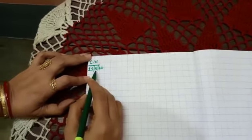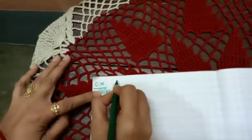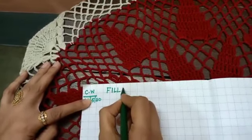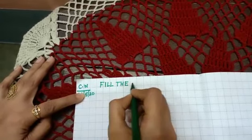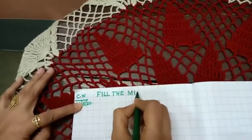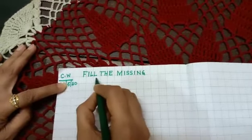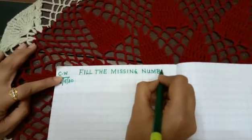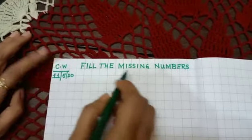Here you will write 'fill the missing numbers'. So first here you will write F-I-L-L fill, T-H-E the, fill the. Then write missing M-I-S-S-I-N-G. Fill the missing numbers N-U-M-B-E-R-S. Fill the missing numbers. Okay children, have you written?